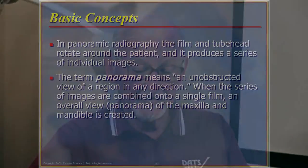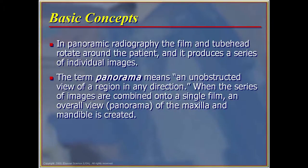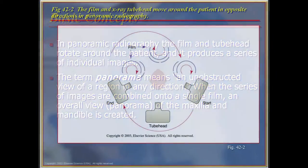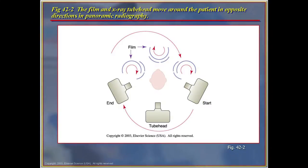Because panoramic images are not as clear or well-defined as intraoral films, bitewing films are almost always used as an adjunct to the panoramic film to detect dental caries or periapical lesions. In panoramic radiography, the film and tube head rotate around the patient and produce a series of individual images. The term panorama means an unobstructed view of a region, and when these images are combined onto a single film, an overall panoramic view of the maxilla and mandible is created.